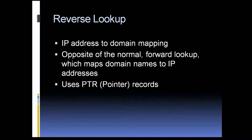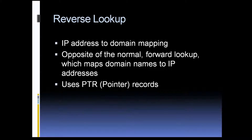Next, you've got a reverse lookup, which is basically just the opposite of a normal forward lookup. So instead of doing a domain-to-IP mapping, a reverse lookup is where you've got an IP address and you're going to map that to an actual domain name. When you do a reverse lookup, you're actually looking at the pointer records, which will be listed in the zone file.